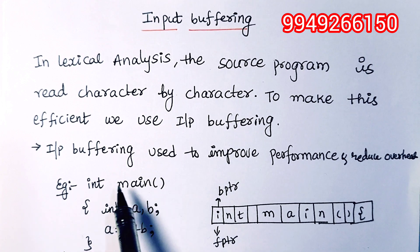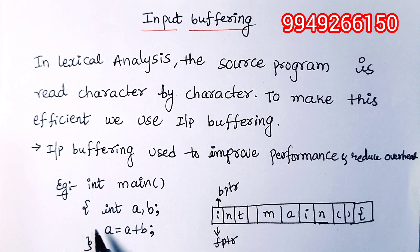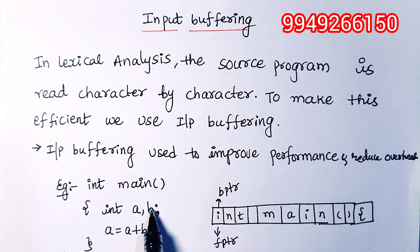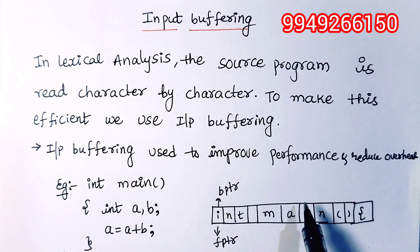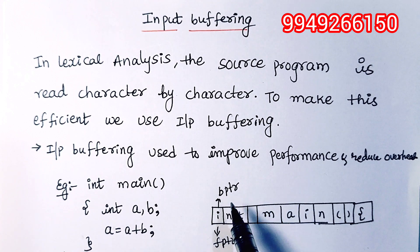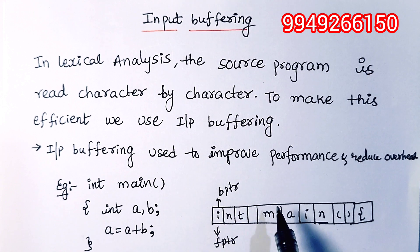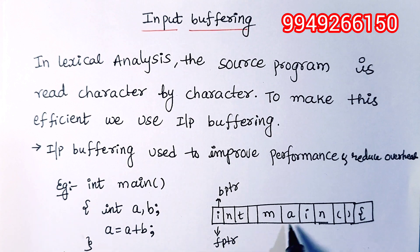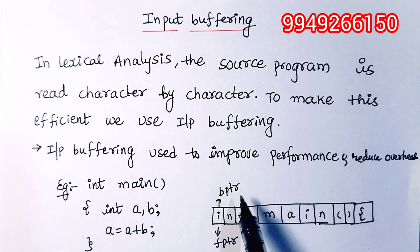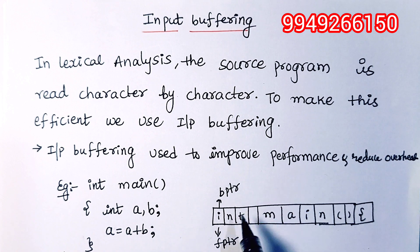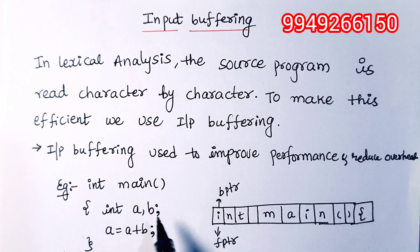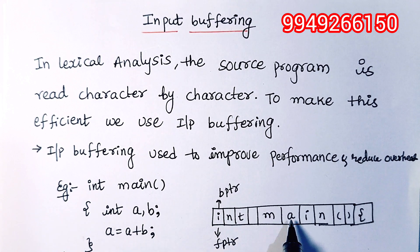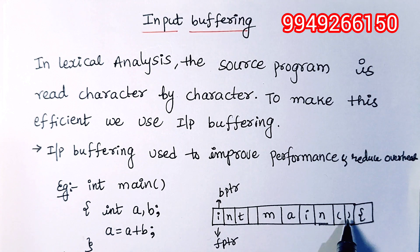I have taken a simple program: int main, int a comma b, a is equal to a plus b, close bracket. This is the program and how it is going to be stored in the memory — specifically, how it is going to be stored in the input buffering. The program is written as: int space m-a-i-n open bracket close bracket.